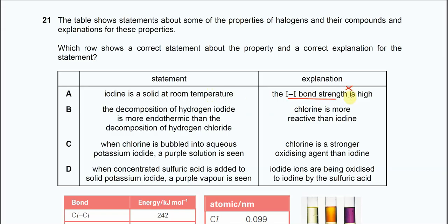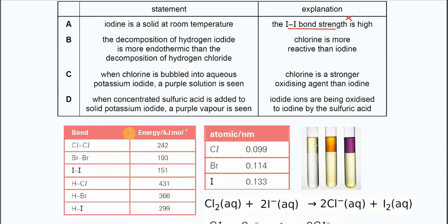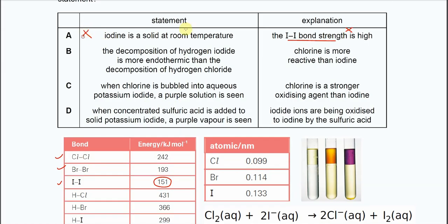And the bond strength of the iodine is actually quite low compared to others. For example, let's look at these three bond energies. So the bond energies of the iodine is 151 kilojoules per mole. It's smaller than the bond energies of the chlorine and bromine. So therefore, the bond strength of this iodine is not as strong as others. So A cannot be the answer because the explanation cannot explain the statement and the explanation is not really correct.